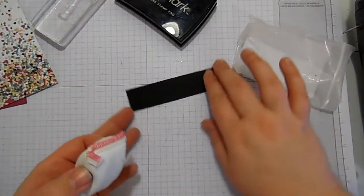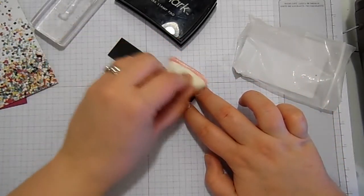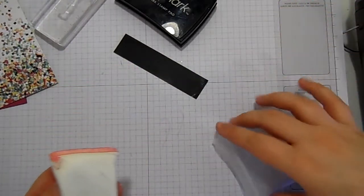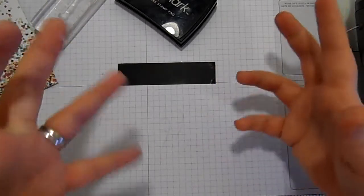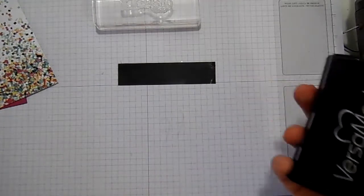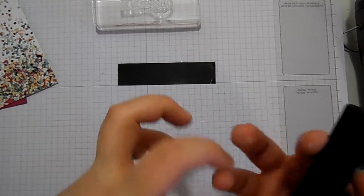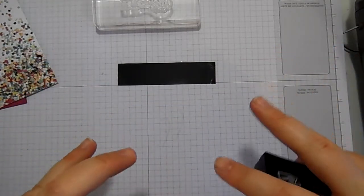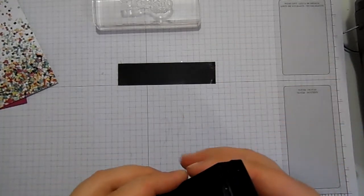So, to heat emboss. The first thing we're going to do on our basic black card stock is we're going to pop our embossing buddy down and we're going to cover it in some of the powder. Now, this powder stops all the oil off your fingers from getting onto the card stock, and it means that your embossing is crisper because the embossing powder will stick to anything moist.